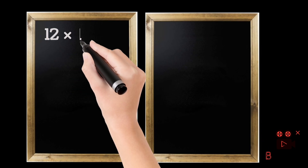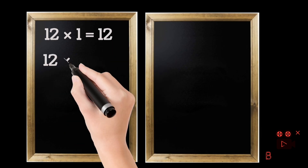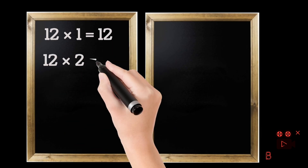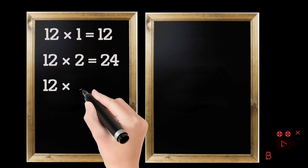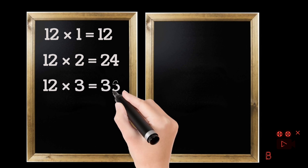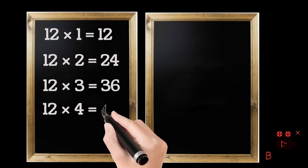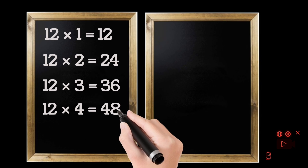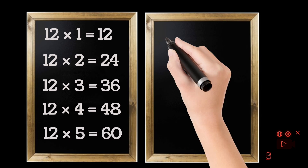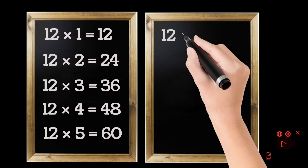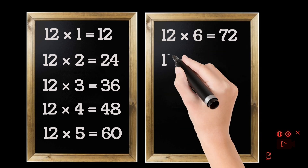12 ones are 12. 12 twos are 24. 12 threes are 36. 12 fours are 48. 12 fives are 60. 12 sixes are 72.